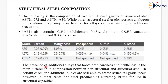The presence of additional alloys that boost both hardness and brittleness is the main difference in composition between non-structural and structural steel. In certain cases, the additional alloys are still able to create structural grade steel. However, in other cases, the steel produced is extremely brittle for use in structural capacities. That is all about the composition of structural steel. Thank you very much, students.